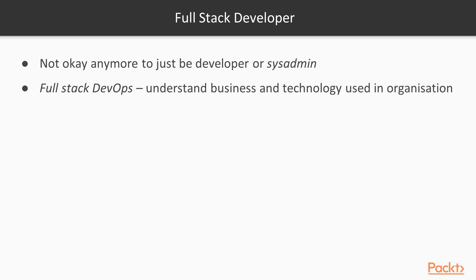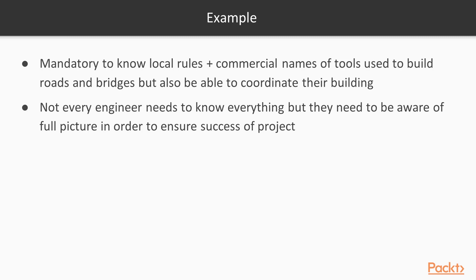It is not okay anymore to just be a developer or a sysadmin. You need to be a full-stack DevOps engineer in order to get success in any project. Full-stack DevOps means that you need to understand the business and the technology used in the organization. Think about it — if you became a civil engineer instead of an IT engineer, it is mandatory to know the local rules plus the commercial names of the tools used to build roads and bridges, but also be able to coordinate their building. Maybe not every engineer needs to know everything, but they need to be aware of the full picture in order to ensure the success of the project.